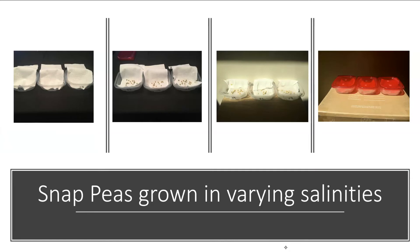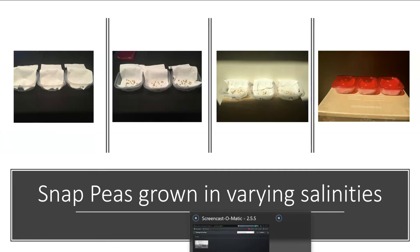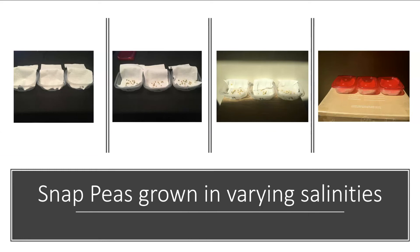Let's look at an actual example. I grew some snap peas at my house over three days, placing them into plastic containers with water at different salt concentrations. One container had just deionized water — pure water. The other two had a 1% salt solution and a 5% salt solution. This works out to approximately 0 parts per thousand, 10 parts per thousand, and 50 parts per thousand respectively.